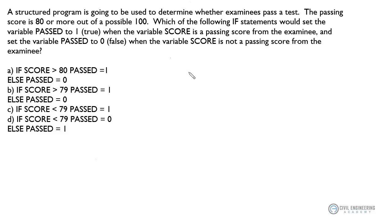Which of the following if statements would set the variable PASSED to 1 (true) when the variable SCORE is a passing score from the examinee, and set the variable PASSED to 0 (false) when the variable SCORE is not a passing score from the examinee? So let's look at this logic. The key to this problem is understanding a little bit about structured programming.